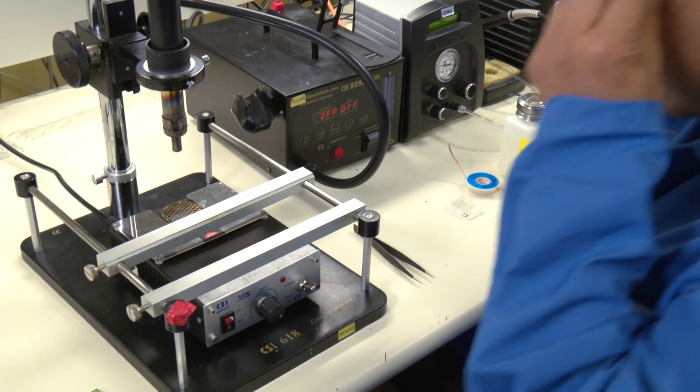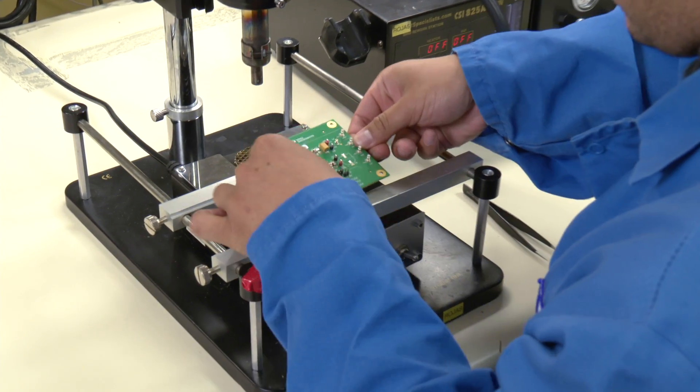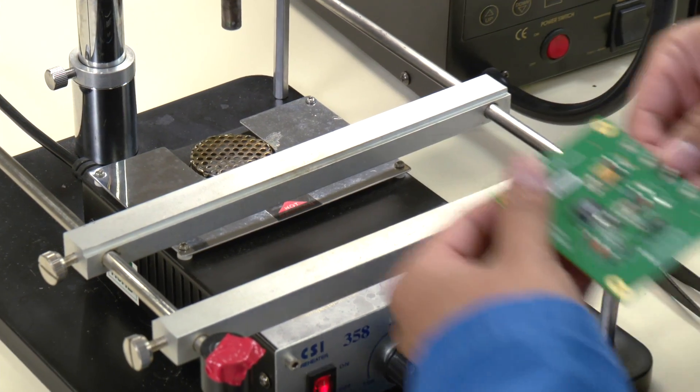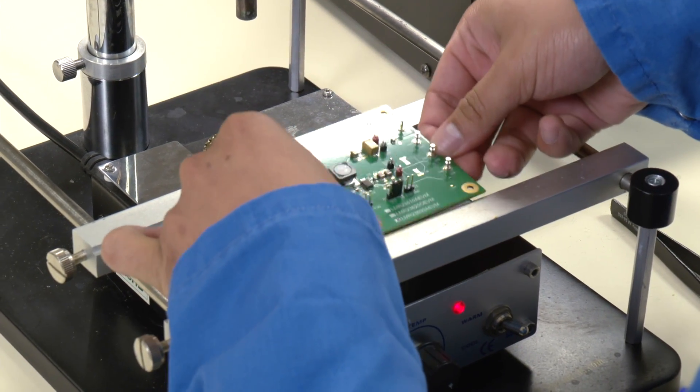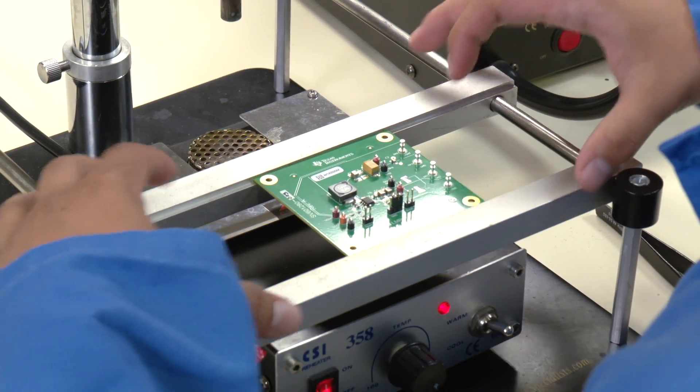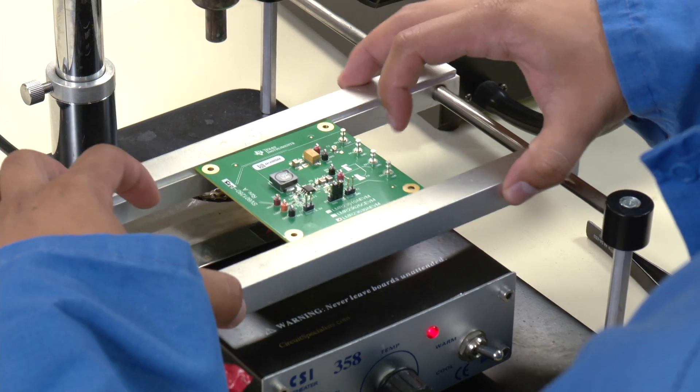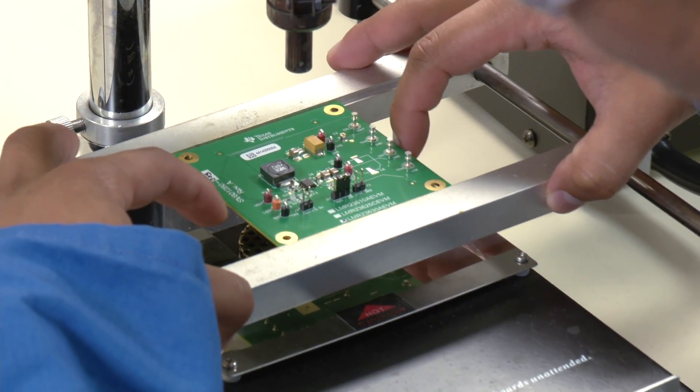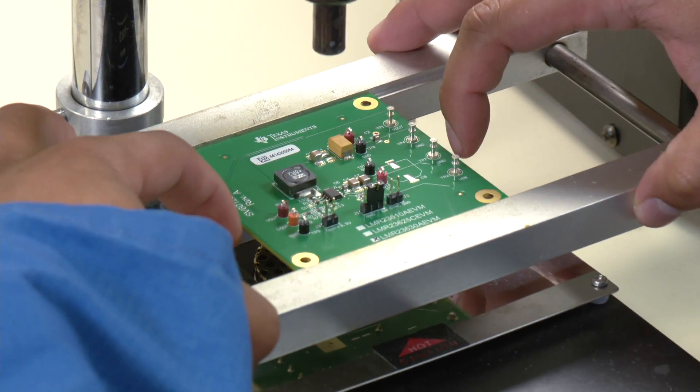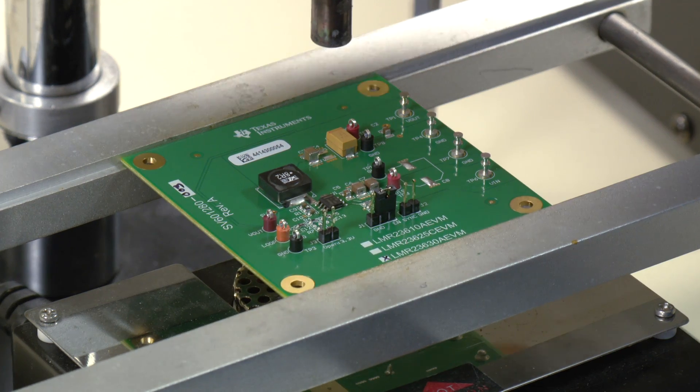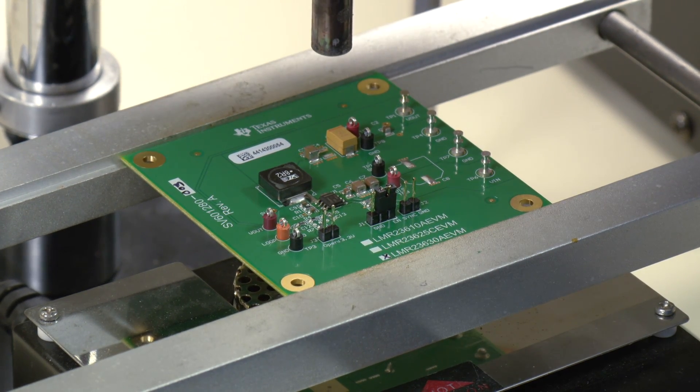Let's begin. First, let me turn on the preheater and this hot air reflow system. I'll move the board over to the preheater. The preheater is used to preheat the board just in case your SOIC has a bottom DAP.